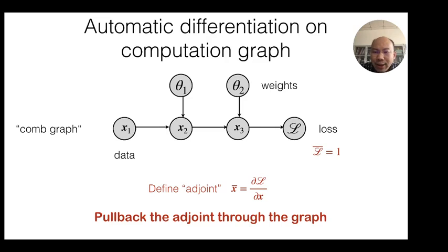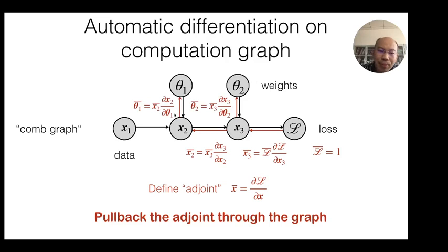To consider gradient information, we can define something called an adjoint - the gradient of the loss function with respect to the data. It has this interesting name, adjoint. We know that in the end we have adjoint equals one by definition. The goal is to pull this adjoint information from the end all the way through the network, reaching all parameters in the program and possibly your data. This can be done by applying the chain rule.